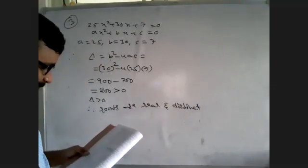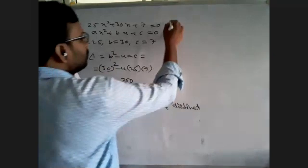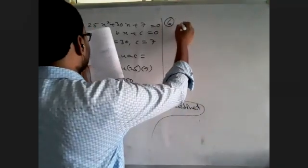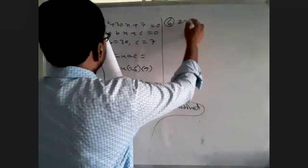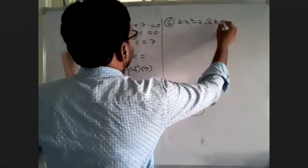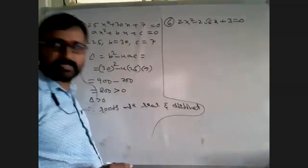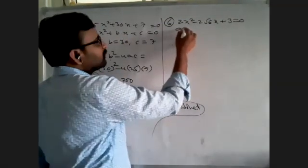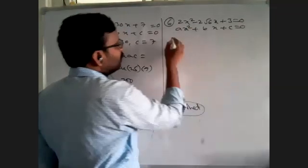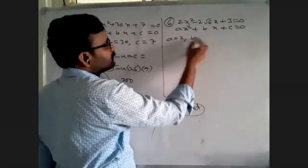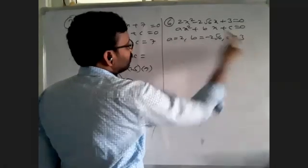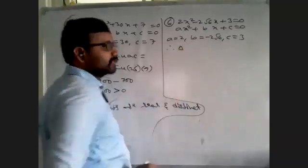One more question: the equation is 2x² - 2√6x + 3 = 0. Comparing with Ax² + Bx + C = 0, A is equal to 2, B is equal to -2√6, C is equal to 3.